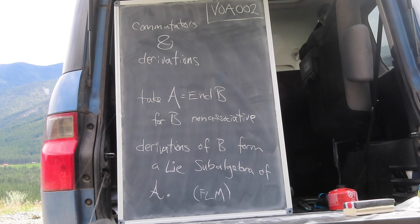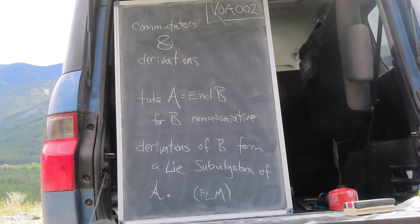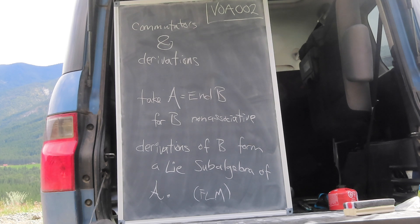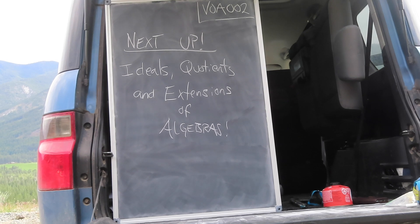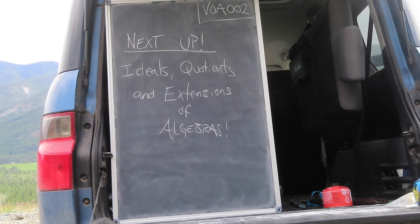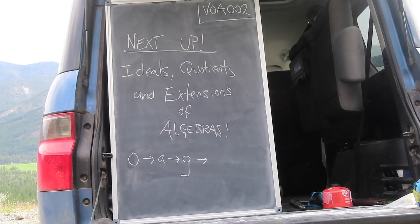We now turn to a subtle but useful relationship between commutators and derivations. Let A be the endomorphisms of some non-associative algebra B — B might well be a Lie algebra, for example. As FLM points out, the derivations of B form a Lie sub-algebra of A, which is to say the commutator of two derivations is, in fact, a derivation, which you might have already explored in the exercise above. And that's our show! Next time, we'll investigate further structure on algebras, like their quotients and extensions.